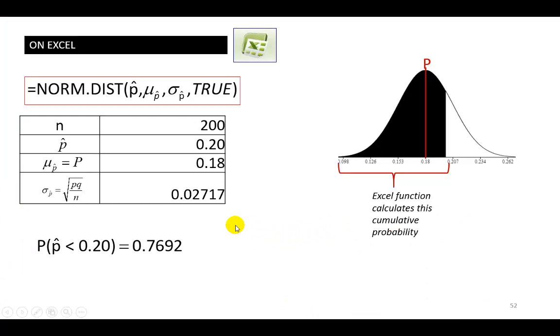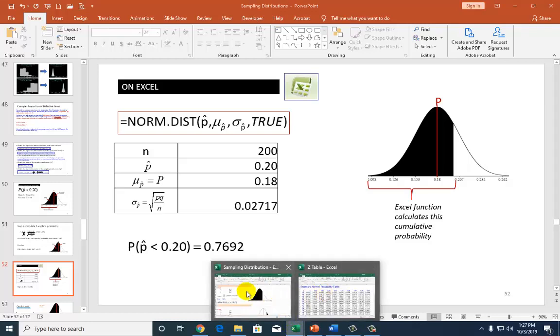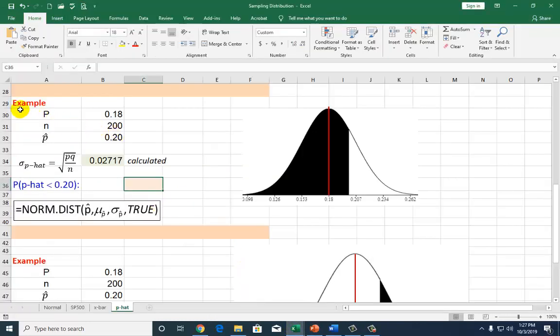However, a quicker and probably nicer way to do so is to use the Excel function, the NORM.DIST function. And here's the function that we're going to utilize. Let's go to Excel real quick and hook it up. That's it right here. First, I define my input data right there.